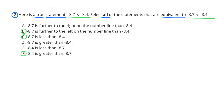Number 2. Here is a true statement: negative 8.7 is less than negative 8.4. Select all equivalent statements. I did not select A, because negative 8.7 is not further to the right than negative 8.4. I didn't select D, because negative 8.7 is not greater than negative 8.4. I didn't select E, because negative 8.4 is not less than negative 8.7. I selected B — negative 8.7 is further to the left on the number line than negative 8.4. I selected C — negative 8.7 is less than negative 8.4. And I selected F — negative 8.4 is greater than negative 8.7.